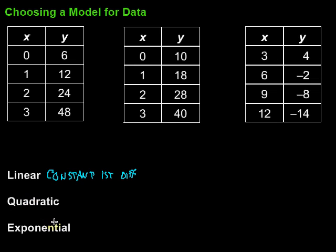For something to be quadratic, we're going to look again at the y values for a constant second difference.